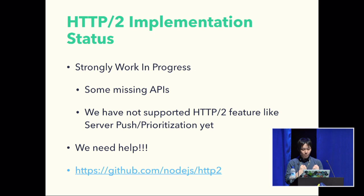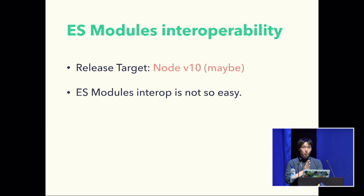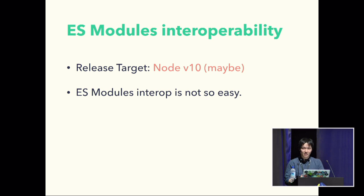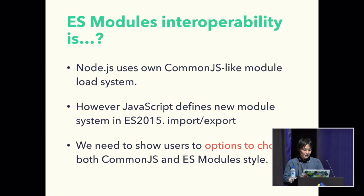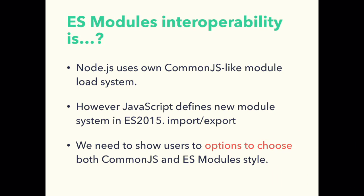Please visit github.com/nodejs/http2 to contribute. The next future Node.js feature is ES modules interoperability. This feature's release target is Node v10, maybe. ES modules interoperability is quite difficult. As you know, Node.js uses its own CommonJS-like module loading system. However, JavaScript defines a new module system in ES 2015 — the import/export syntax.